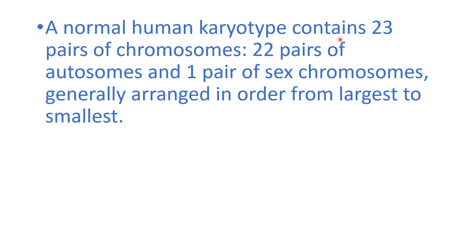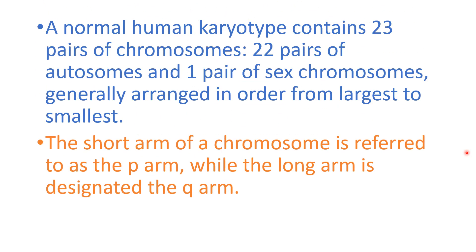A normal human karyotype contains 23 pairs of chromosomes: 22 pairs of autosomes, which govern the bodily characters, and one pair of sex chromosomes, which determine the sex of the individual. Generally, these are arranged in order from the largest to the smallest.